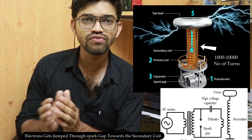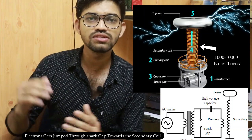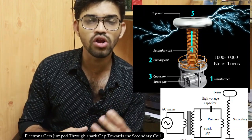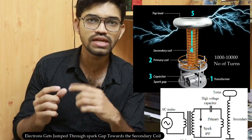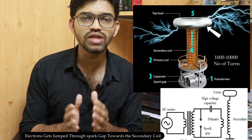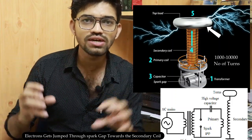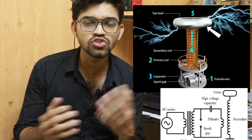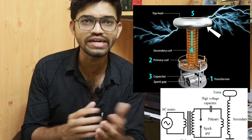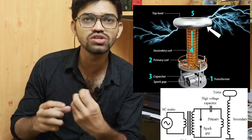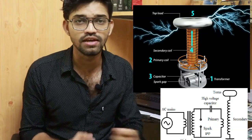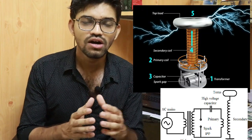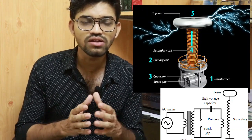Current flows through the secondary coil, and on top of the coil there is a top load — a donut-shaped component. Due to this top load, one can produce spectacular lightning shows, similar to thunderstorm lightning. This is the effect produced by the donut-shaped top load in the Tesla coil.